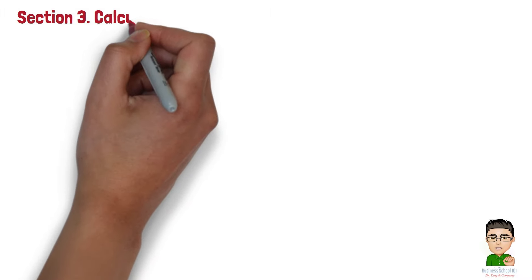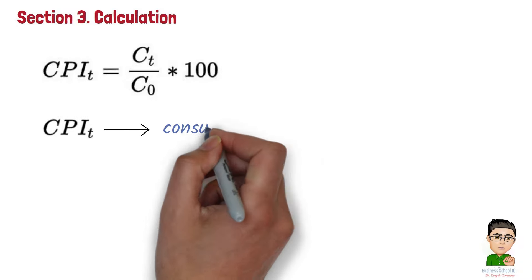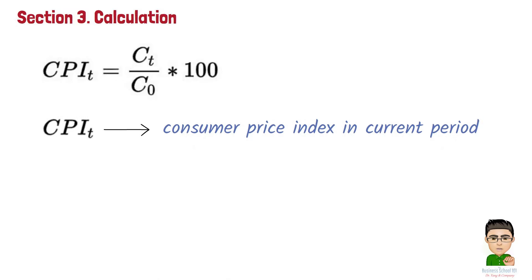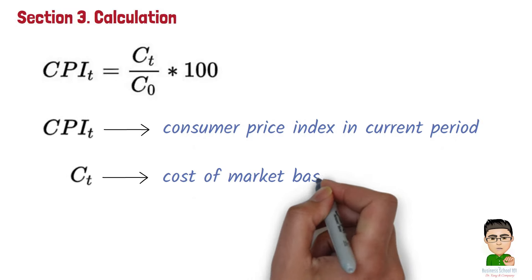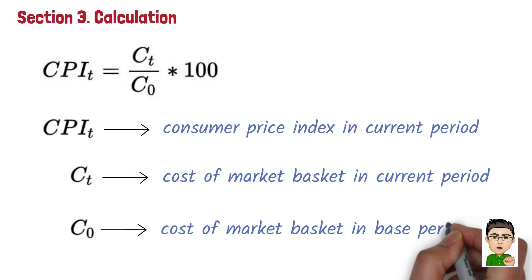Section 3. Calculation. The formula to calculate the CPI is as follows. Here CPI-T refers consumer price index in current period, C-T refers cost of market basket in current period, C-0 refers cost of market basket in base period.